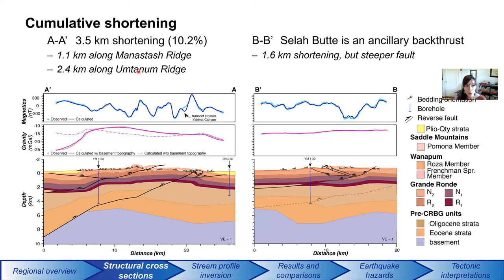The results from these cross sections show that across the Yakima Canyon region, we're getting about three and a half kilometers of shortening over Miocene-to-modern time — about 10%. How this is partitioned is that the Manashtash Ridge fault system has taken up about 1.1 kilometers of shortening, and the Umtanum Ridge anticline system has taken up about 2.4 kilometers. The Selah Butte anticline appears to be an ancillary back thrust to the Umtanum Ridge system, and the Umtanum fault is taking up about 1.6 kilometers but is also steeper.